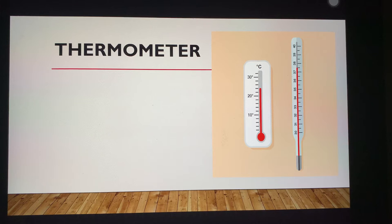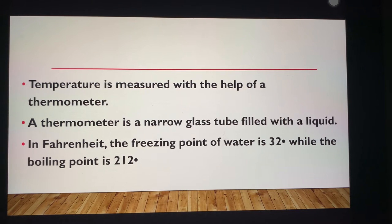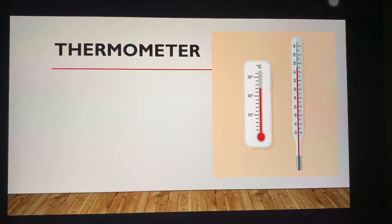Here you can see a diagram of a thermometer. Temperature is measured with the help of a thermometer. A thermometer is a narrow glass tube filled with a liquid — as you can see in the diagram. The liquids used in thermometers are basically mercury and alcohol.